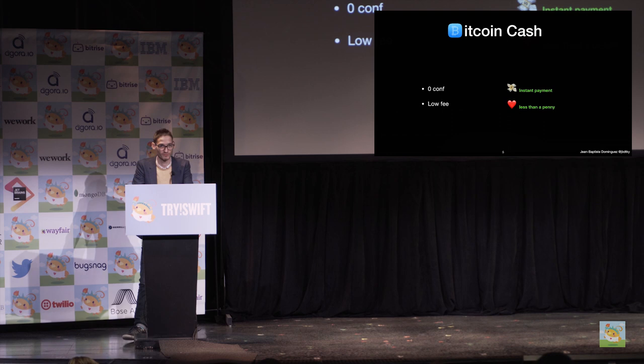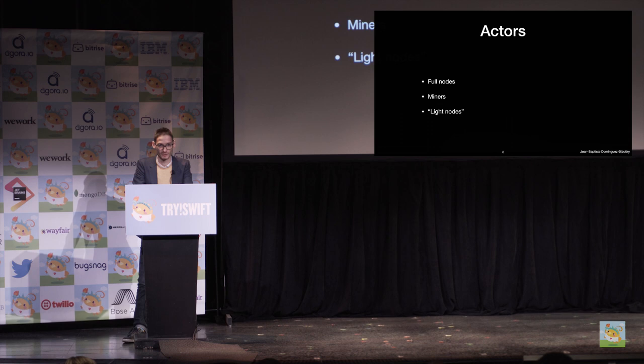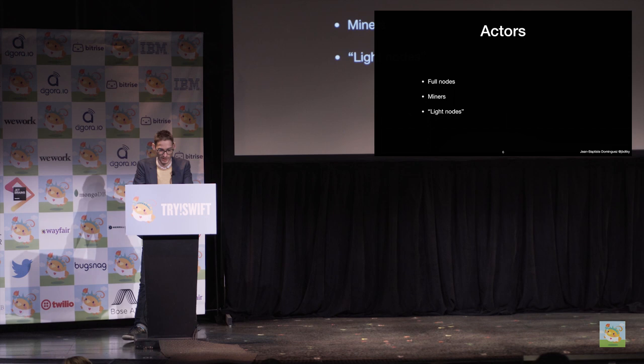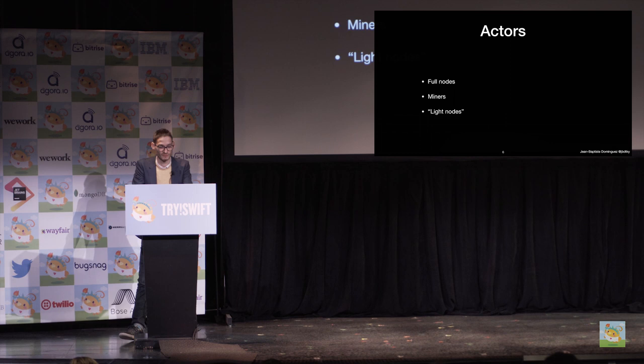There are several actors in Bitcoin Cash. First, the full nodes store all the blockchain and verify every single transaction to make sure they are legitimate and compliant with the Bitcoin Cash rules. The full node interacts with other nodes from the network and propagates blocks and transactions. Then we have the miners, who solve the mathematical problem and create blocks with transactions contained in the memory pool. The memory pool is a waiting room for transactions that have not yet been included in a block.